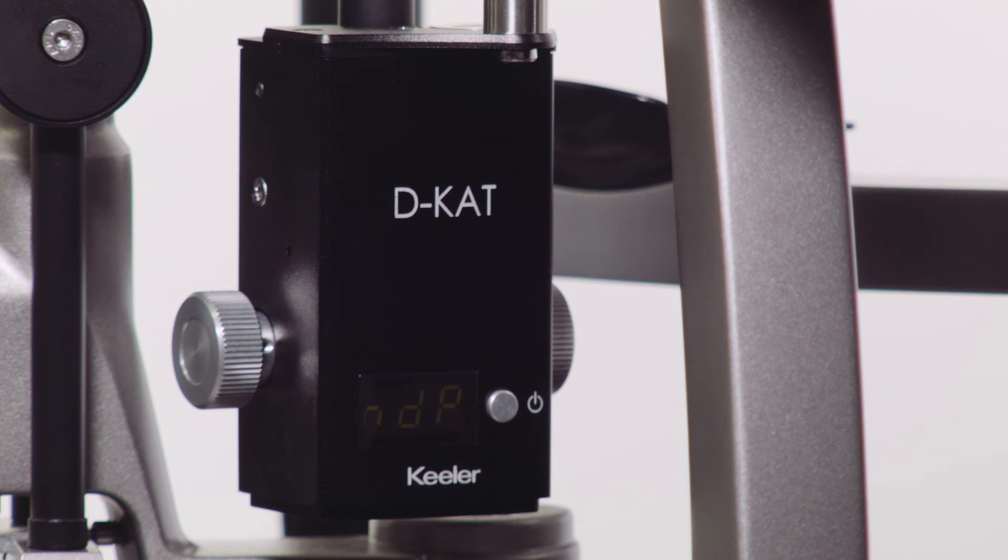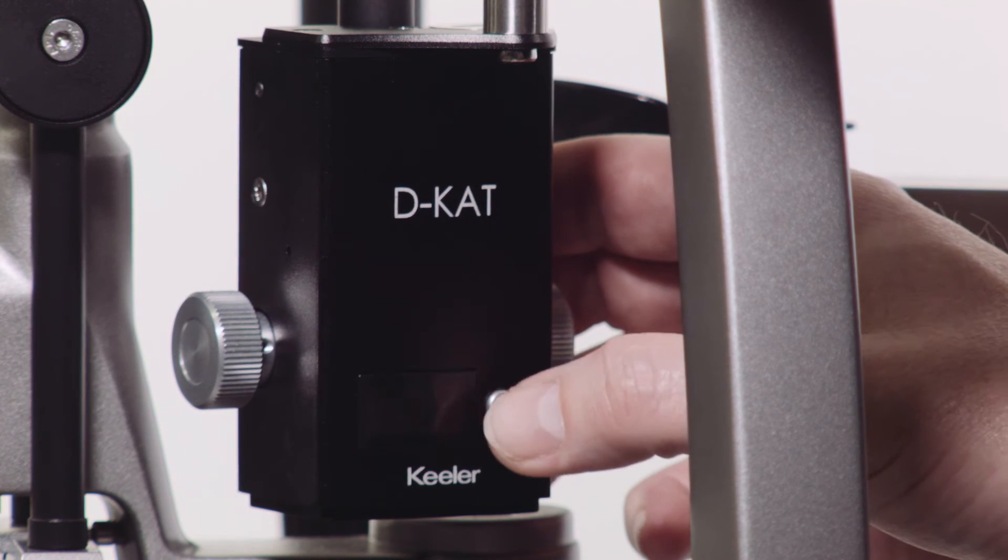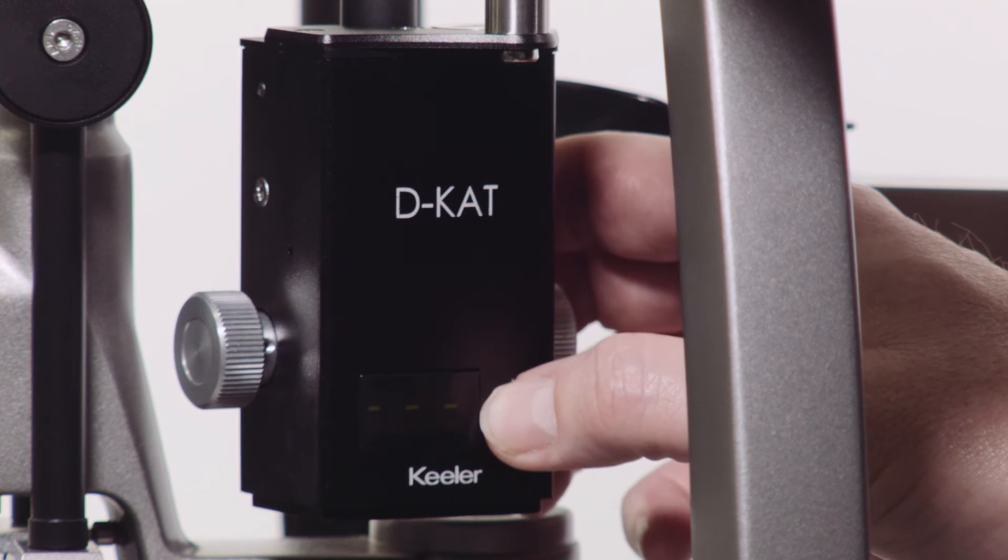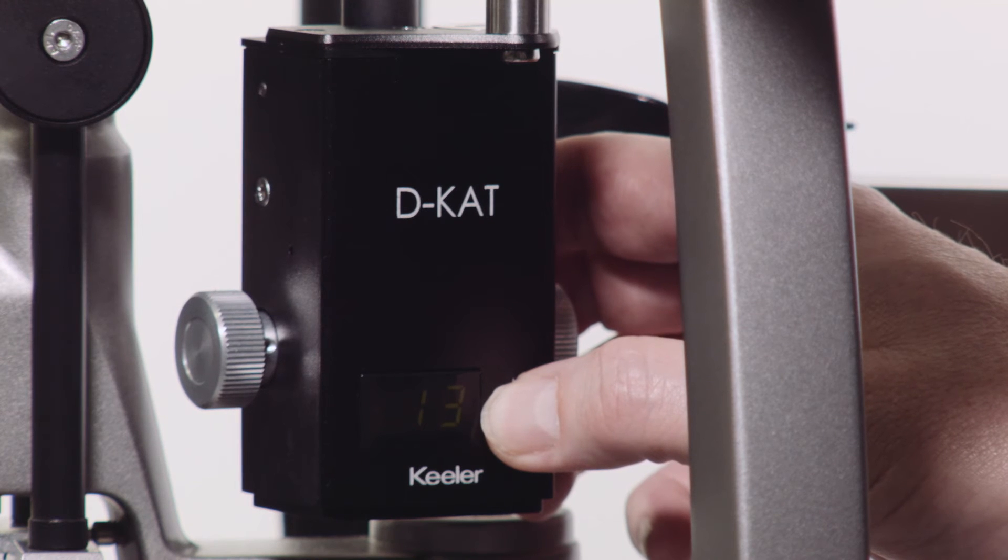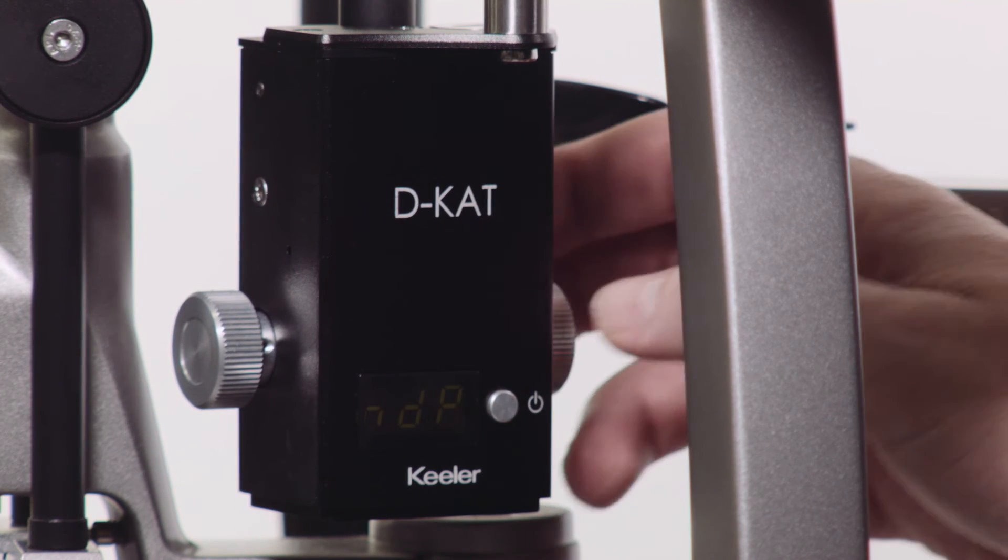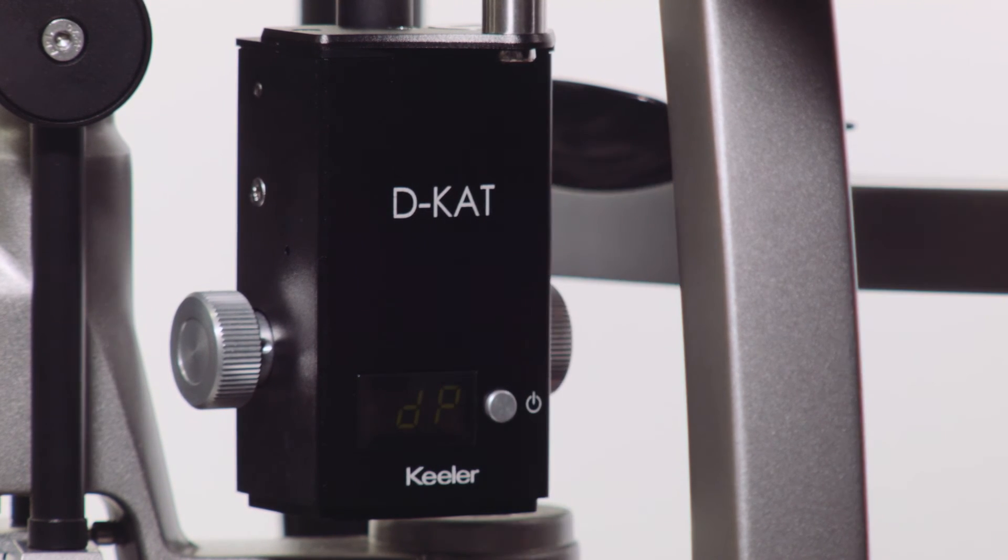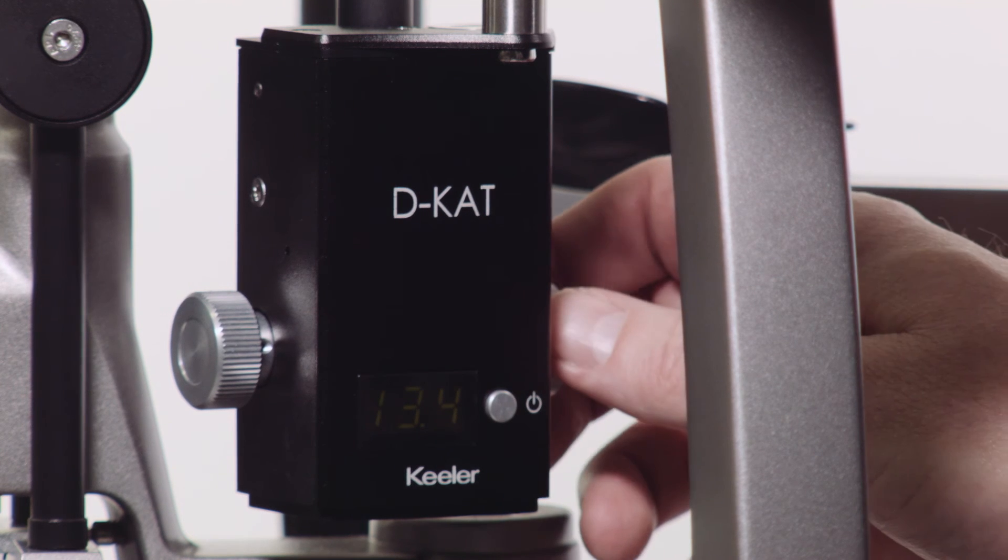press the function button for three seconds, then release the function button. D-P, or decimal point, and N-D-P, for no decimal point, can be toggled with the function button. Release the function button to select the desired setting.